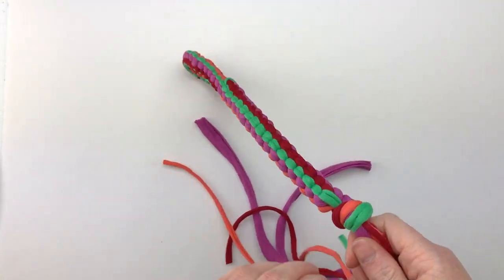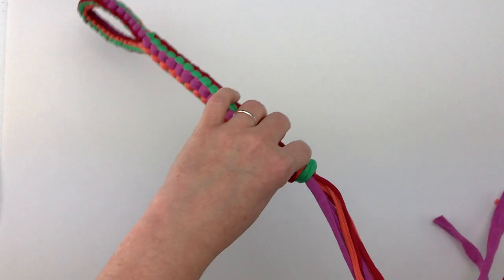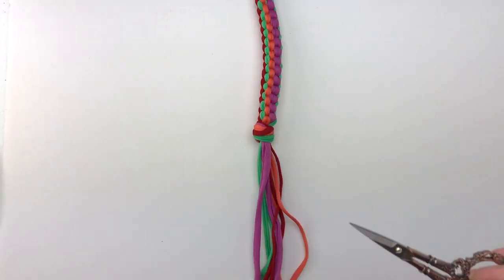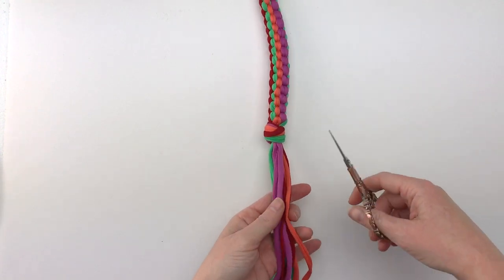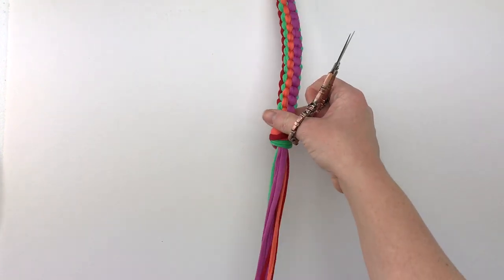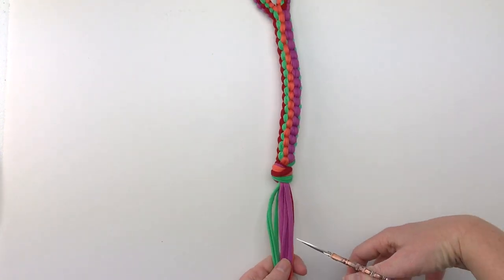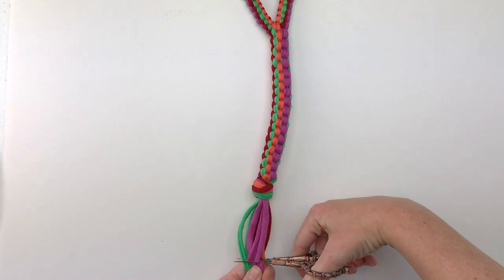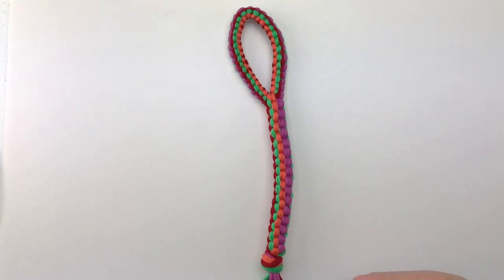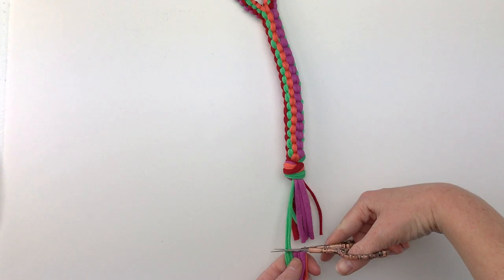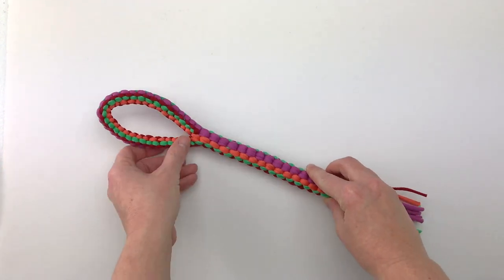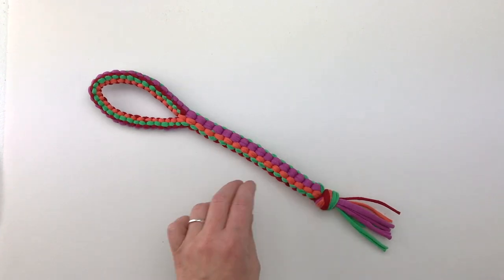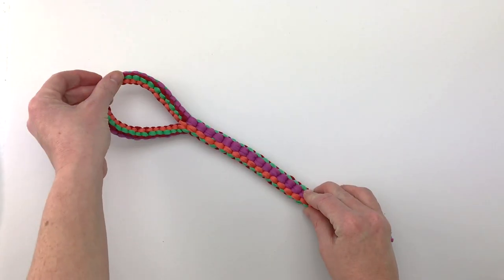And now I'm going to take some scissors and trim our tails. These are from Warm Crochet. Aren't they pretty? And I'm going to trim just a couple inches. There we go. And now we have our finished tug toy. Theo is going to love this.